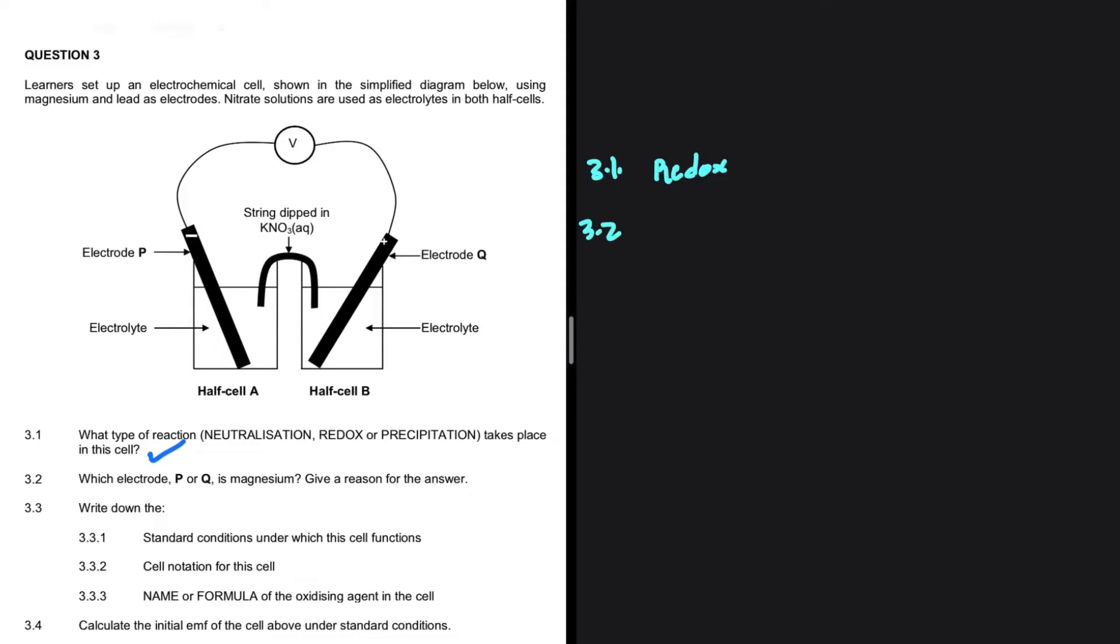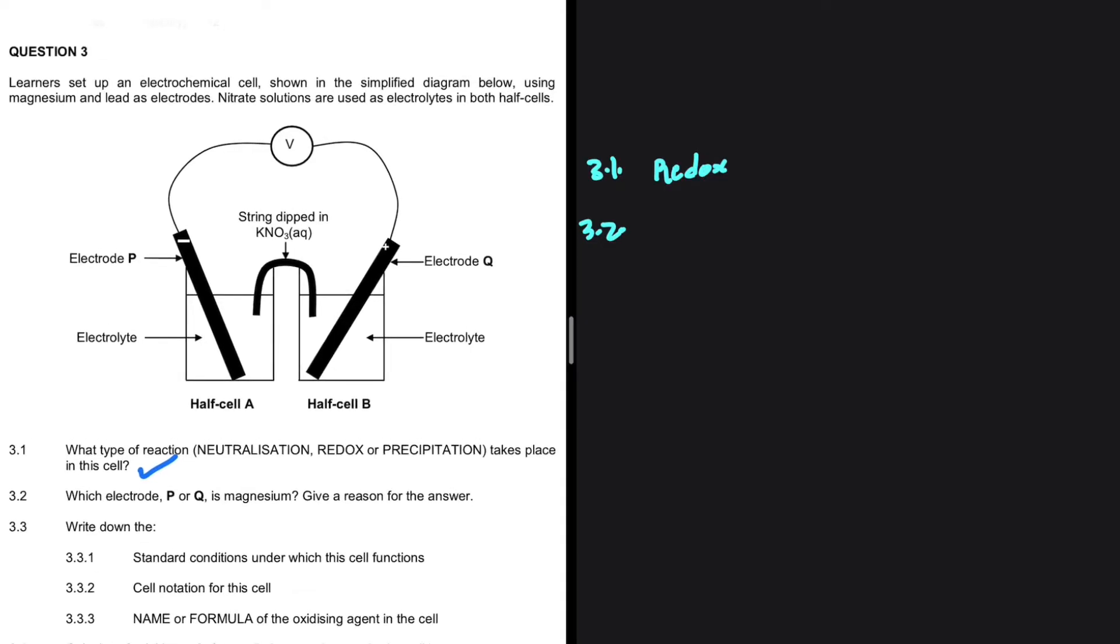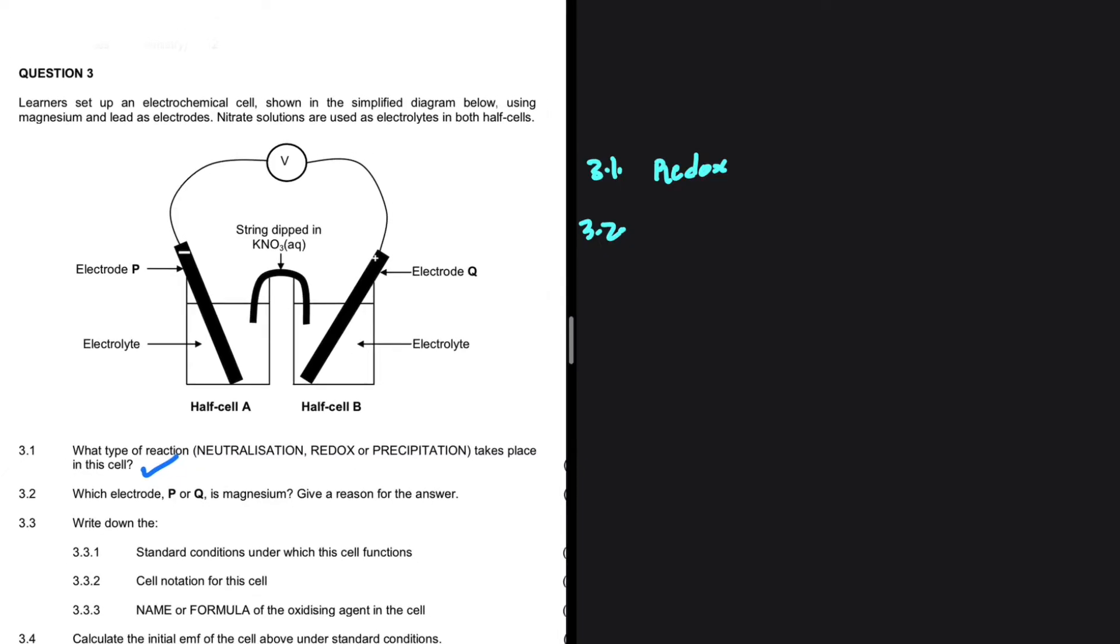Let's look at 3.2. Which electrode P or Q is magnesium? Give a reason for the answer. So let's go ahead and look at our electrodes.